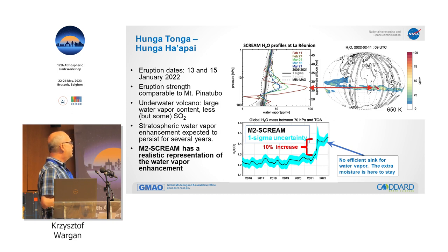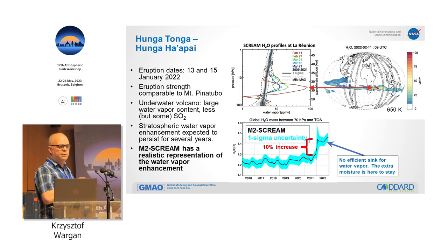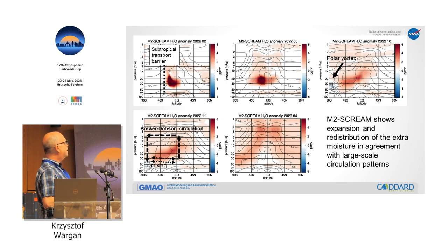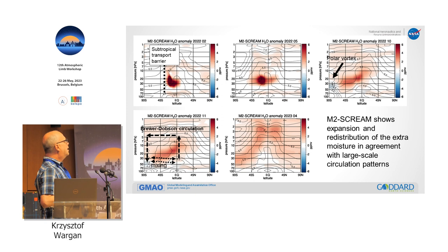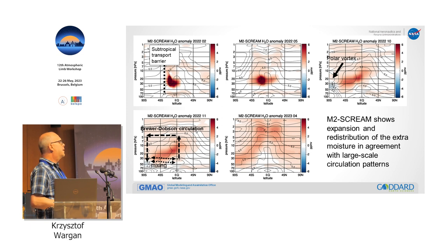The overall increase in water vapor mass in the stratosphere calculated from SCREAM was about 10%, which agrees with the study by Millan et al. This is the zonal mean evolution of the water vapor enhancement from February, then May, October, and so on, all the way to April of this year. It starts very localized and spreads horizontally, but also assumes the shape associated with the Brewer-Dobson circulation — upwelling in the tropics and downwelling elsewhere — until we have enhanced water vapor essentially everywhere in the stratosphere.